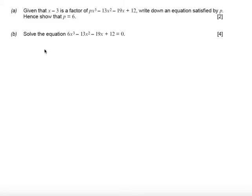In this question we're told that given x minus 3 is a factor of px cubed minus 13x squared minus 19x plus 12, write down an equation satisfied by p, hence show that p equals 6.